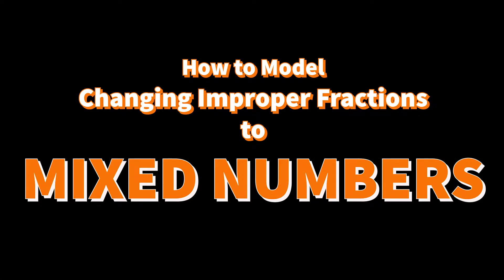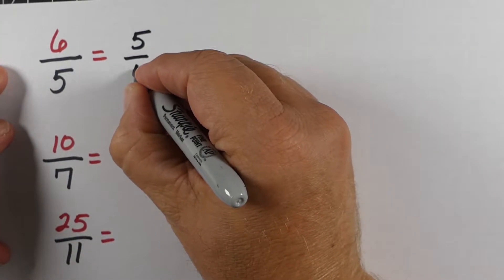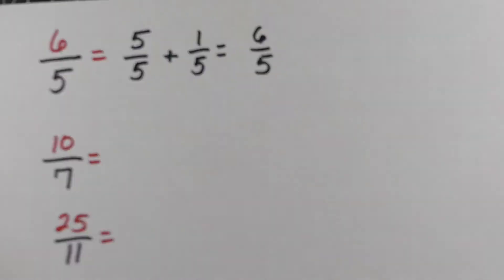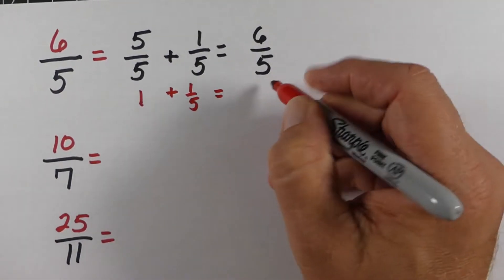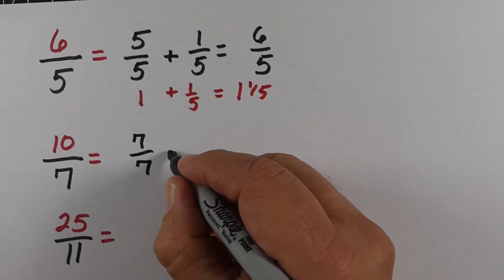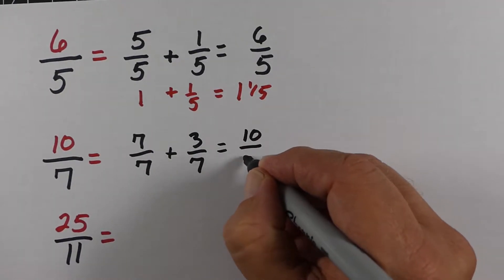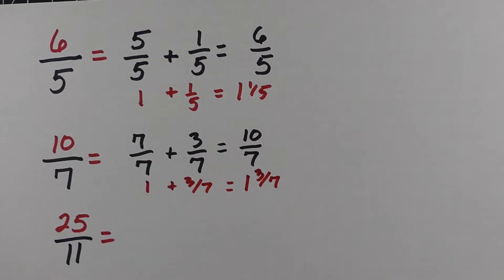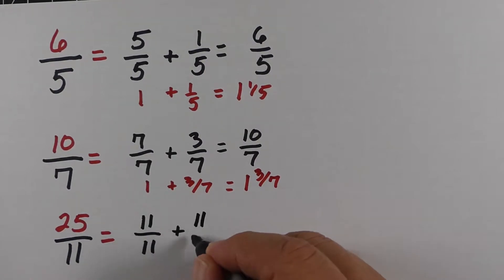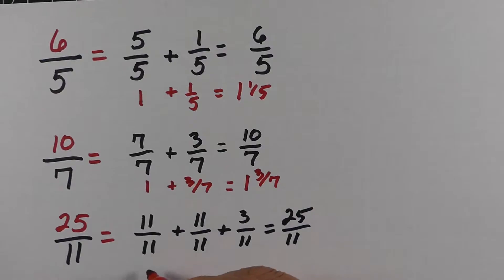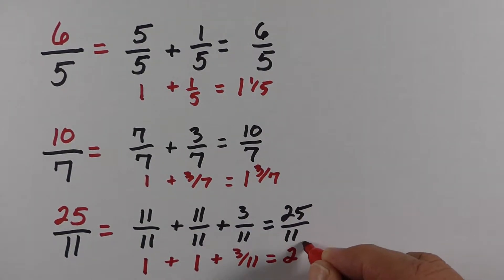It's helpful to model changing an improper fraction to a mixed number. For 6/5, we can think of it as 5/5 and 1/5. The 5/5 represents 1 — anytime the numerator and denominator are the same, it equals 1 — and then you have 1/5 left over, so it's 1 and 1/5. For 10/7, think of it as 7/7 and 3/7. The 7/7 represents 1 plus the 3/7, giving 1 and 3/7. For 25/11, we have 11/11 and another 11/11, each representing 1, with 3/11 left over — so the answer is 2 and 3/11.